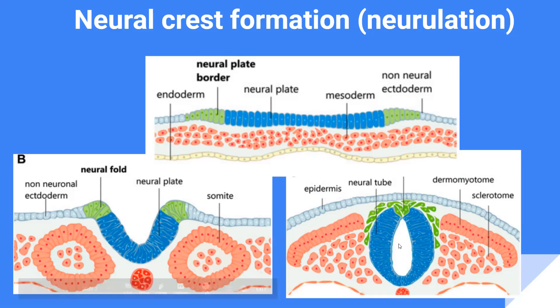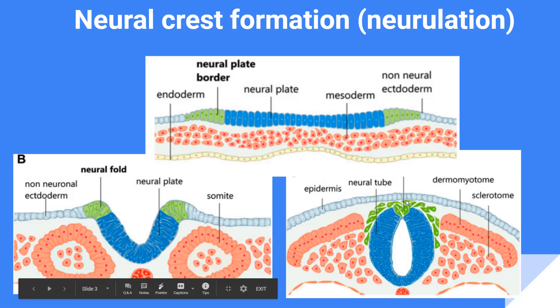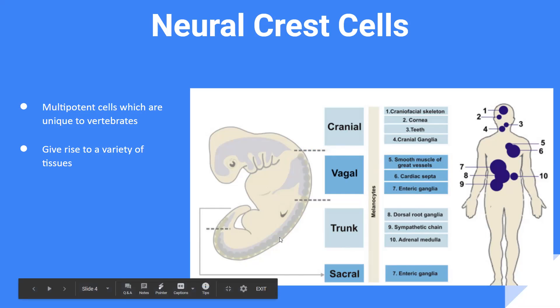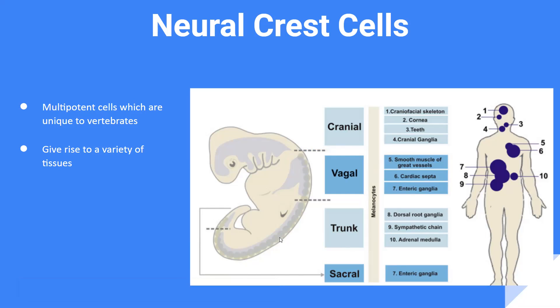Once this has taken place, the neural crest cells are now going to be located in the dorsal aspect of this newly formed structure. The neural crest cells, which are found all along the embryo, will subsequently adopt different fates and contribute to the formation of different tissues and organs.